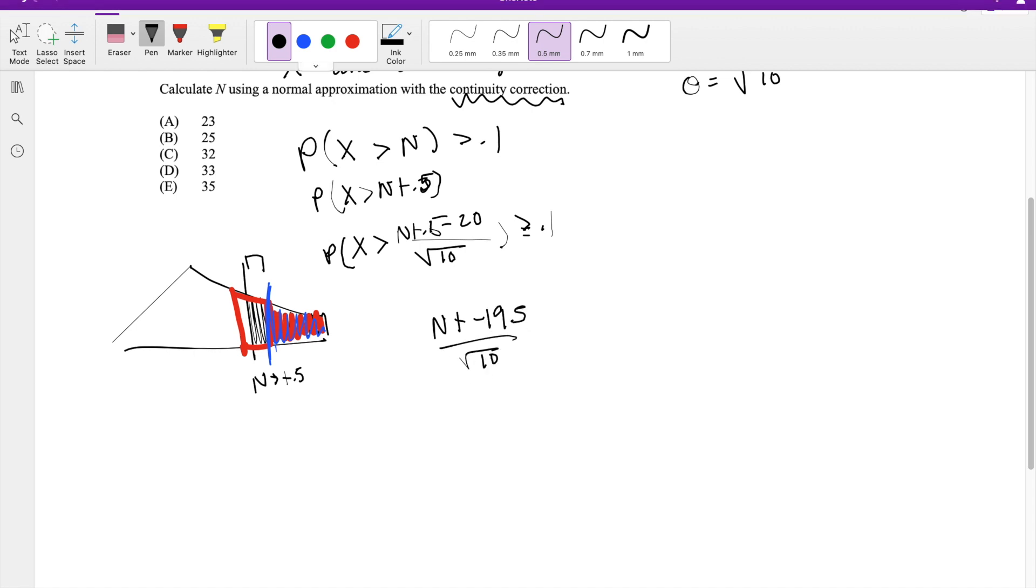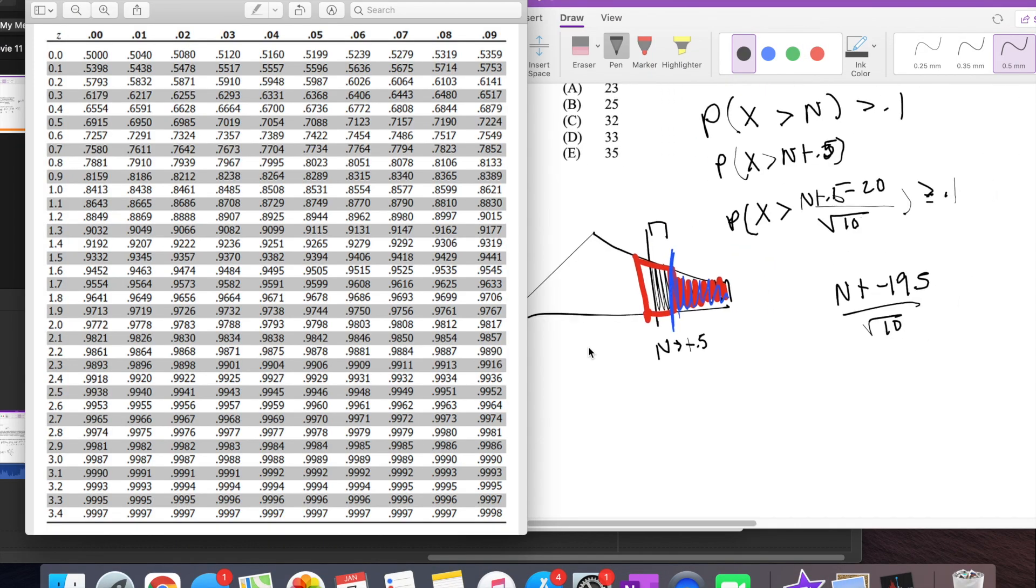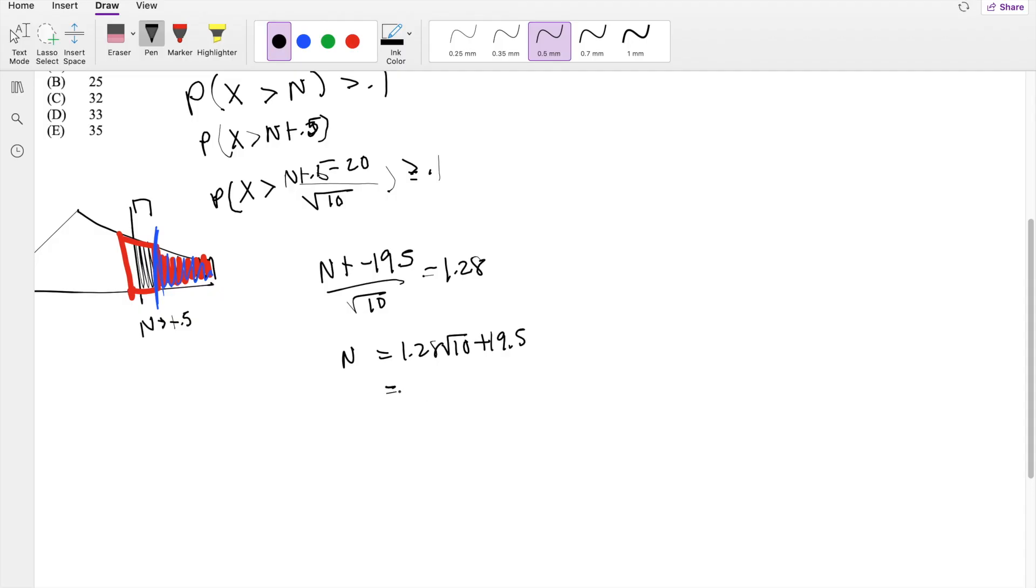Let's pull up our z-table and see what value corresponds to 0.9 since we're looking at the positive side. So that's going to be equal to 1.28. So then N has to be equal to 1.28 times square root of 10 plus 19.5. So this equals 23.55.